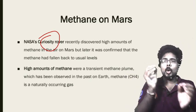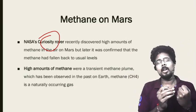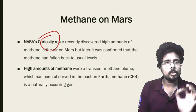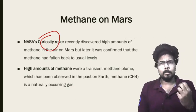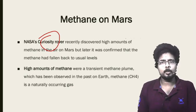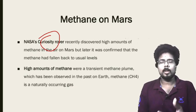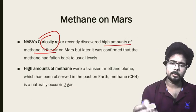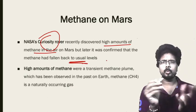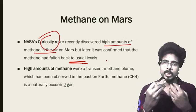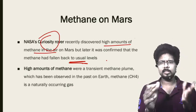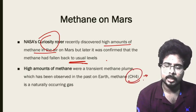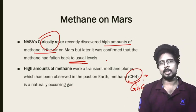Next topic: methane on Mars. NASA's Curiosity rover researches on Mars — what particles are available and what can happen on Mars. NASA's Curiosity rover recently discovered high amounts of methane in the air of Mars, but it later confirmed that the methane had fallen back to usual levels. This was big news because during Earth's initial formation stage there was emission of methane. Methane (CH4) is a greenhouse gas, similar to carbon dioxide.